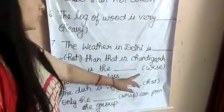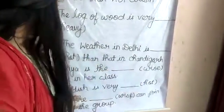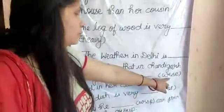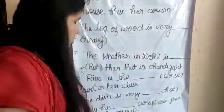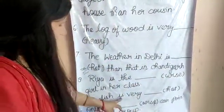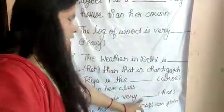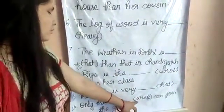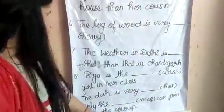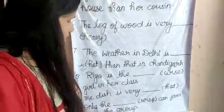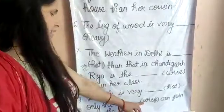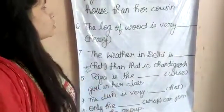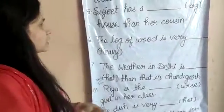Next है: She is the ___ wise girl in her class — यहाँ superlative होगा, W-I-S-E-S-T। Next: This is very hot — यहाँ 'hot' ही रहेगा। Next: Only the ___ wise can join the group — यहाँ भी 'wisest' fill करेंगे, W-I-S-E-S-T।